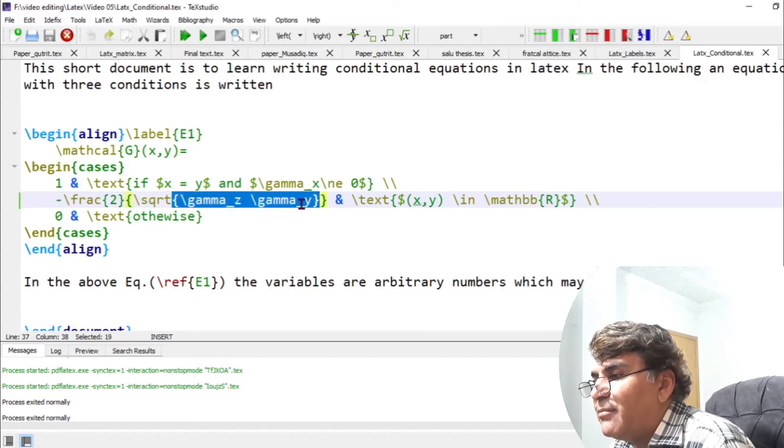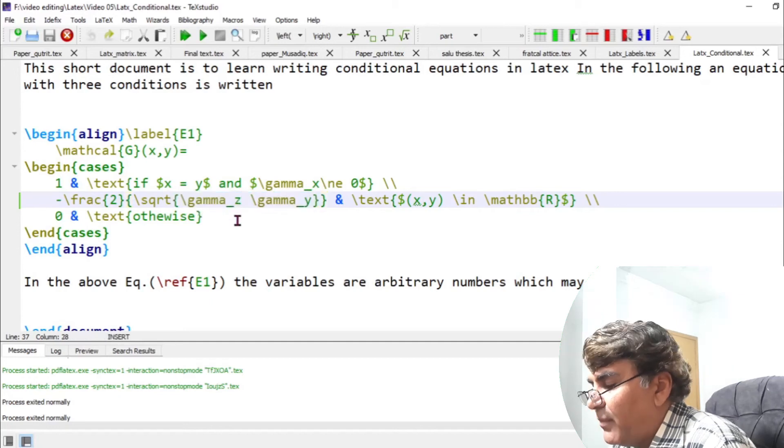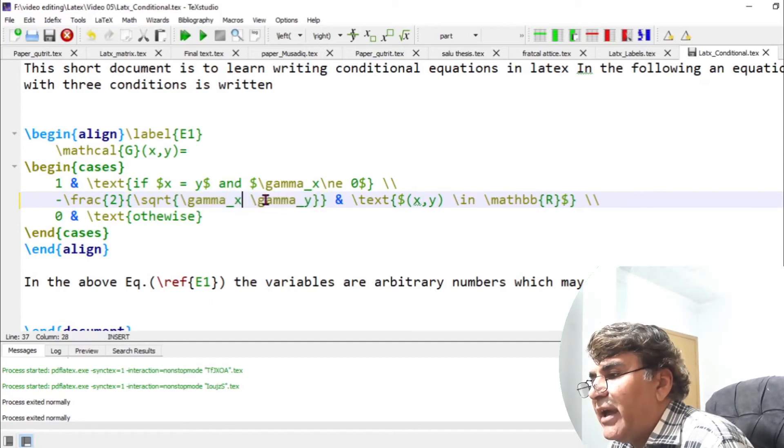So gamma x and gamma y, and then like in the first line, I put an ampersand to separate the value of the function and the corresponding condition.